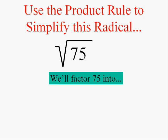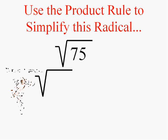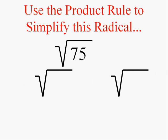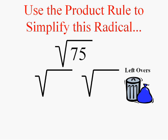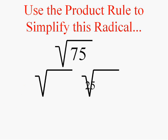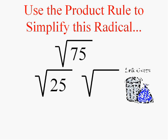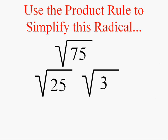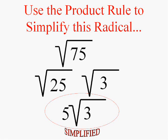We're going to do the same thing every time. Factor 75 into the largest perfect square that goes into it times whatever garbage is left over. The largest perfect square that goes into 75 is 25, and that leaves a leftover of 3. The square root of 25 is 5, and the square root of 3 is left over. So the simplified answer is 5 square root of 3.